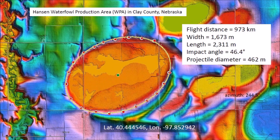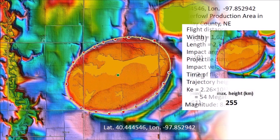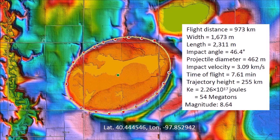The Hansen Waterfowl Production Area in Clay County, Nebraska is located 973 kilometers from Lake Michigan, which is assumed to be the point from which the glacier ice chunk that made this basin was launched. The basin has a width of 1,673 meters and a length of 2,311 meters. The width-to-length ratio corresponds to an impact angle of 46.4 degrees. The diameter of the glacier ice projectile that made the basin is estimated to be 462 meters, which is one-fifth of the basin length. The ballistic equations indicate that the glacier ice boulder was launched at a speed of 3.091 kilometers per second, had a flight time of 7.61 minutes, and reached a height of 255 kilometers above the surface of the Earth — a suborbital spaceflight in the vacuum of space. The kinetic energy of the impact was equivalent to 54 megatons of TNT, which would have caused seismic vibrations of magnitude 8.64.